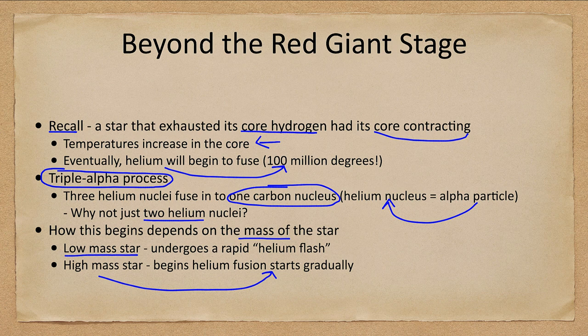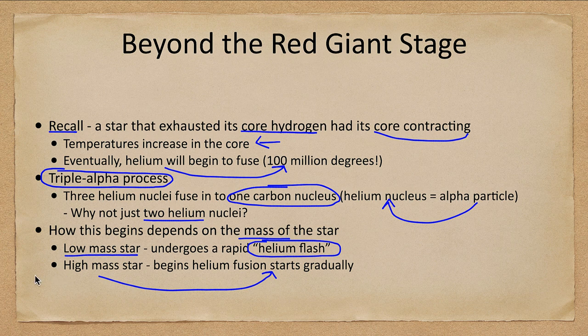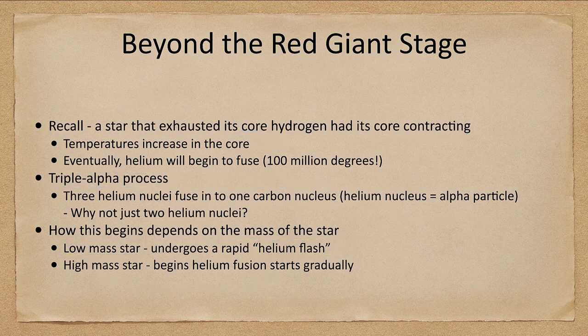Because the core is degenerate, even though helium starts burning it does not initially expand, and the helium burns very quickly in a rapid helium flash, burning up a lot of the core at once. It will slowly expand afterward, but it's a lot faster than in a high-mass star. A high-mass star has more gravitational pressure and hits the higher temperature before the material becomes degenerate.